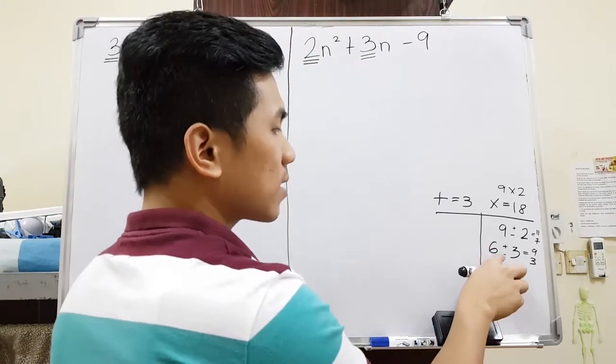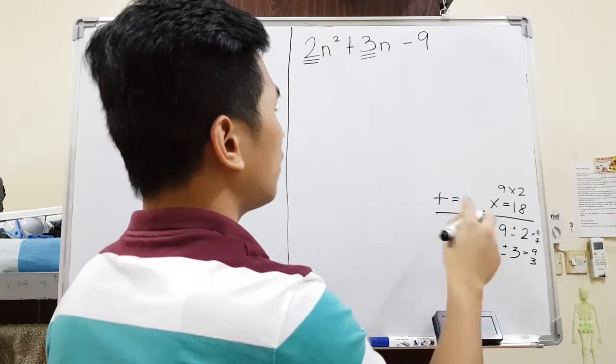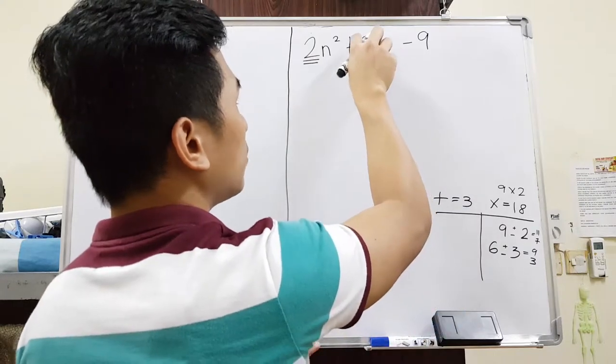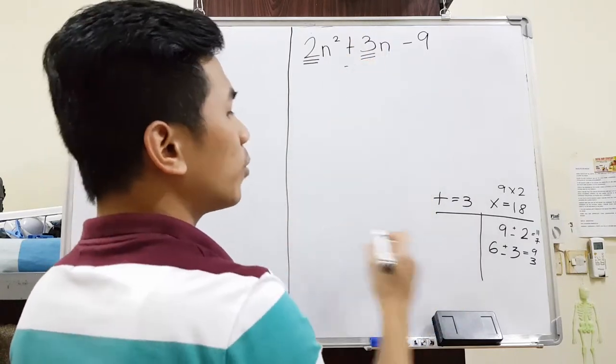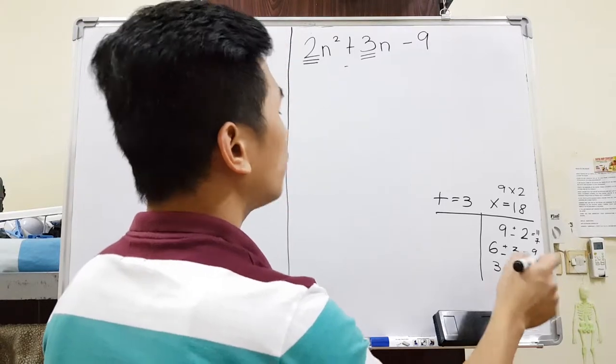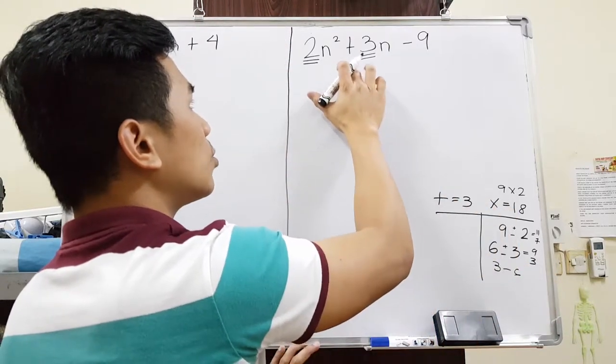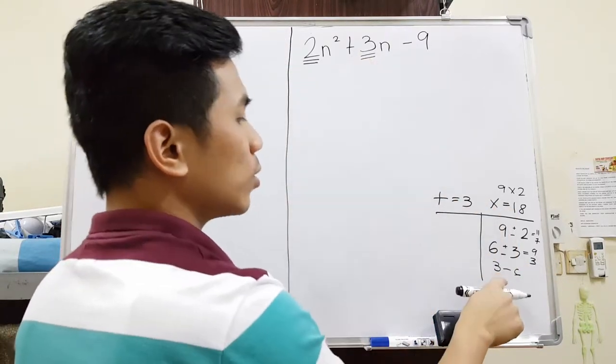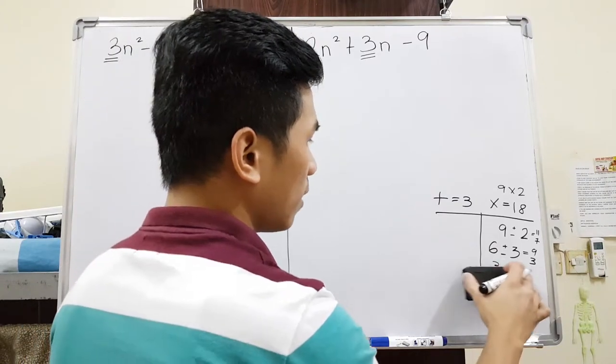Now, you have to check whether it's positive 3 here or negative. Because if it's negative, for example, this is negative 3, we will be using 3 minus 6 in order to obtain negative 3. But since we have a positive 3 here, we will just use 6 minus 3 over here.